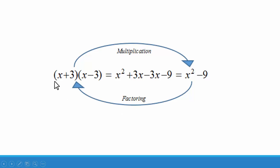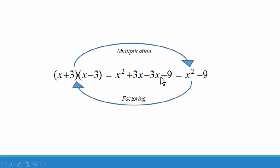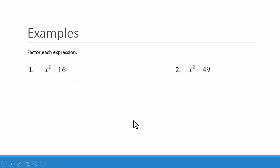In the last chapter, we were given problems such as the quantity x plus 3 times the quantity x minus 3, and we needed to multiply that out. Using FOIL: first terms x times x, outer terms x times negative 3, inner terms 3 times x, and last terms 3 times negative 3. The middle terms 3x and negative 3x are like terms that combine to zero, leaving us with x squared minus 9. Notice this is a difference of two squares: x squared and 9, which is 3 squared.